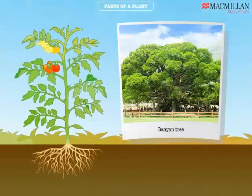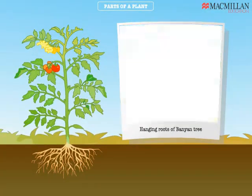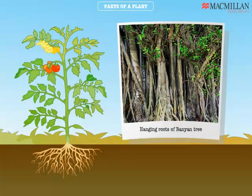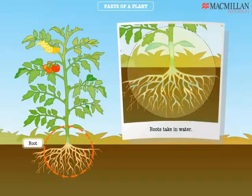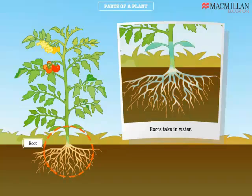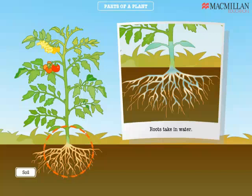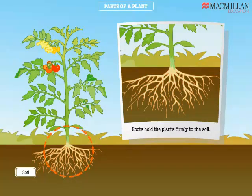In some plants, like the banyan, you'll find them hanging from above. The roots take in water and nutrients from the soil and send them to all the other parts. Nutrients are food for the plants. Roots hold the plants firmly to the soil.